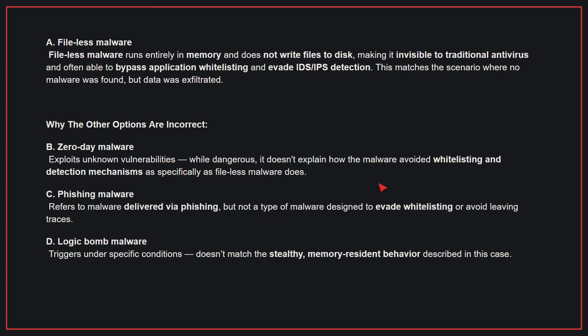Why the other options are incorrect? B: Zero-day malware — this exploits unknown vulnerabilities. While dangerous, it doesn't explain how the malware avoided whitelisting and detection mechanisms as specifically as fileless malware does. C: Phishing Malware — this refers to malware delivered via phishing, but is not a type of malware designed to evade whitelisting or avoid leaving traces. D: Logic Bomb Malware — this triggers under specific conditions. It doesn't match the stealthy, memory-resident behavior described in this case. Therefore, the correct answer is A.